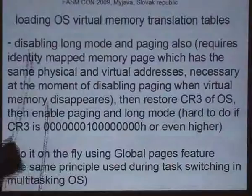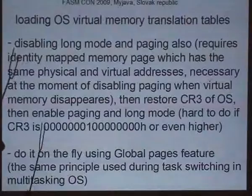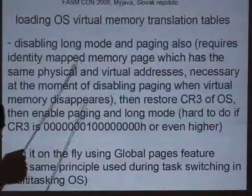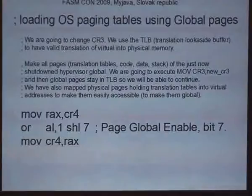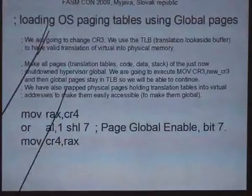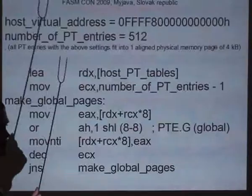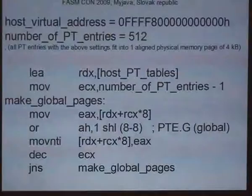For that we use a feature called global pages. Global pages are special pages which stay in the memory translation even when we load another value into control register 3 — they stay in the translation lookaside buffer. So first we enable the PGE bit in control register 4. Three instructions are enough to enable that. Then we need to change every entry in the translation table and set its global bit to be enabled.